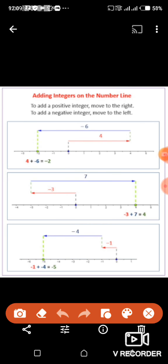Let's have a look. In this picture you can see three examples of adding integers. To add a positive integer, move to the right. To add a negative integer, move to the left.